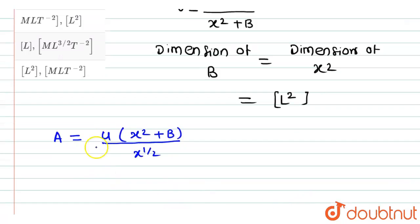So here the dimensions of U, that is energy, or the unit of energy joule, into the unit of x square plus B is meter square, divided by the unit of root of x is root of meter. So on solving this,